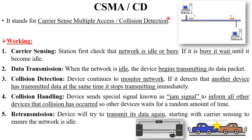After receiving the jam signal, all devices present in the network wait for some random amount of time and cannot send information on that channel. After the channel becomes free, station A retransmits the information. This is called retransmission. So basically, this is how the collision detection protocol works: first sense the carrier, if free transmit the data, then monitor the network — if another device sends at the same time, collision detection occurs, a jam signal is sent to all other devices, and after the channel is free, data is retransmitted.